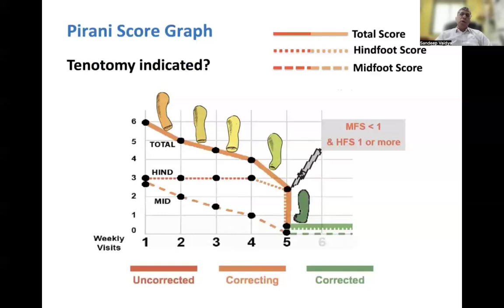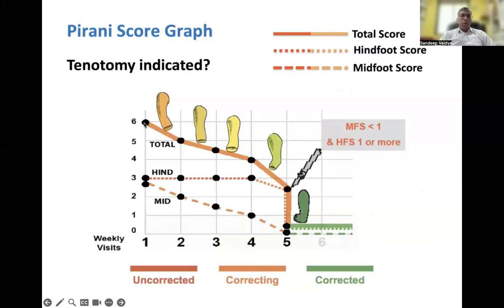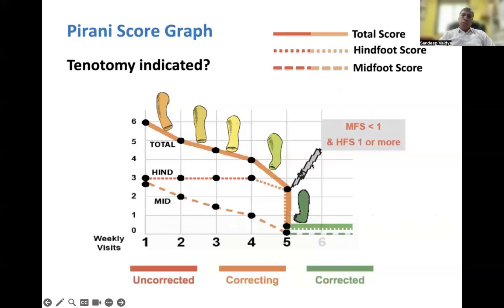For example, the score helps determine the timing of TA tenotomy. In this graph, at the onset of treatment the Pirani score was 6 — hindfoot 3, midfoot 3. As treatment progressed, the midfoot score gradually came down and by the fifth cast had reached 0. However, the hindfoot deformity failed to correct. When the midfoot score reaches 0 but the hindfoot score remains around 2.5, that is the timing to perform a tenotomy. After the tenotomy was performed, the hindfoot score also came down to 0 and the deformity was fully corrected.